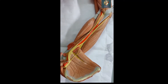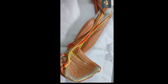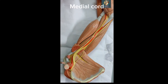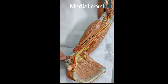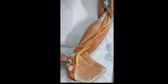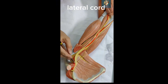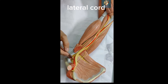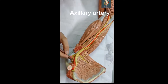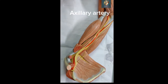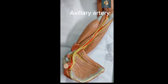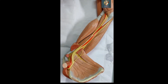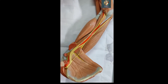The triangular space is bounded superiorly by the teres minor muscle, inferiorly by the teres major, and on the lateral side by the long head of the triceps muscle. On the posterior aspect of the scapular region you can see the different vessels and nerves. These are the different cords of the brachial plexus: the medial cord, the lateral cord, and behind the axillary artery is the posterior cord which is not visible in the specimen.